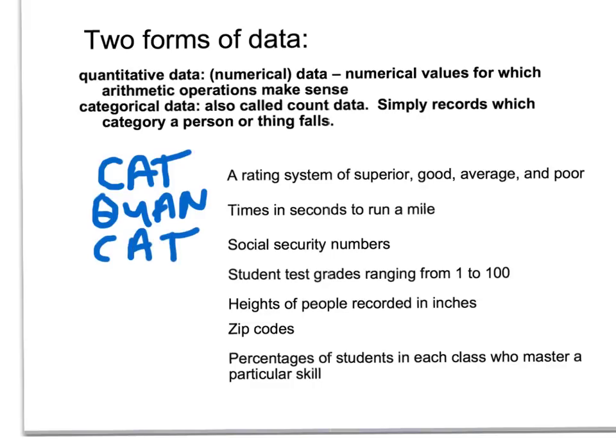Student test scores ranging from 1 to 100 — it is possible to get a score of 98.5. The teacher gives partial credit, and you have all gotten scores with 0.5. So that makes sense, and this would be quantitative.